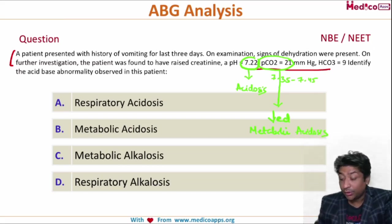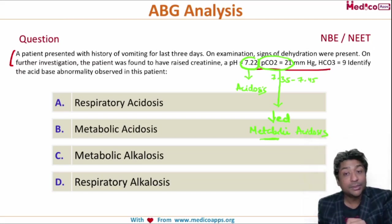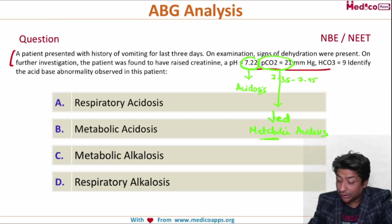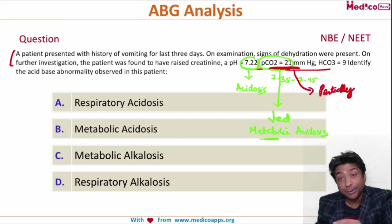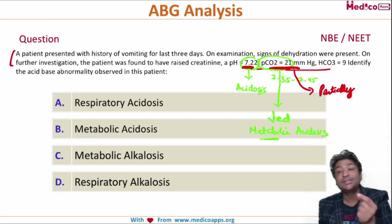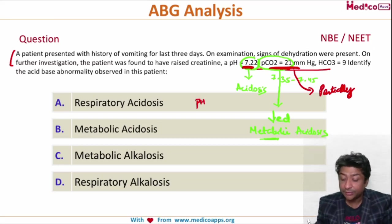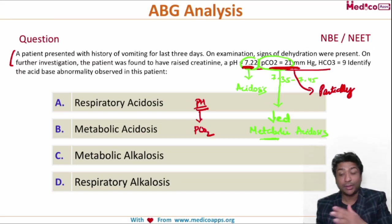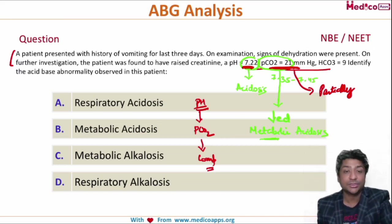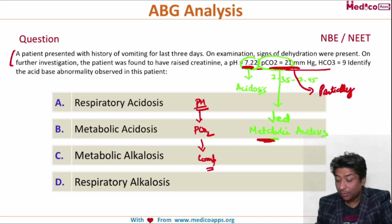Let's also check the compensation. In metabolic acidosis, the compensatory mechanism is via carbon dioxide, and because it is acidosis, carbon dioxide should decrease. In this question the carbon dioxide has actually decreased, so it is partially compensated. Why not completely compensated? Because if it were completely compensated the pH should have returned to normal — and it hasn't. So in less than 15 seconds: pH gave acidosis, pCO2 gave metabolic, and the compensatory mechanism confirmed partial compensation. The correct answer is B — metabolic acidosis.